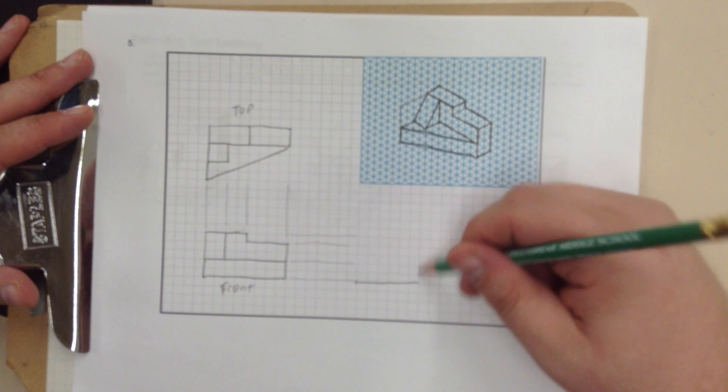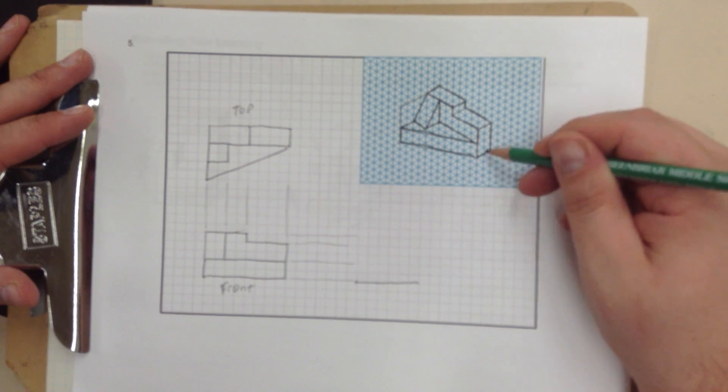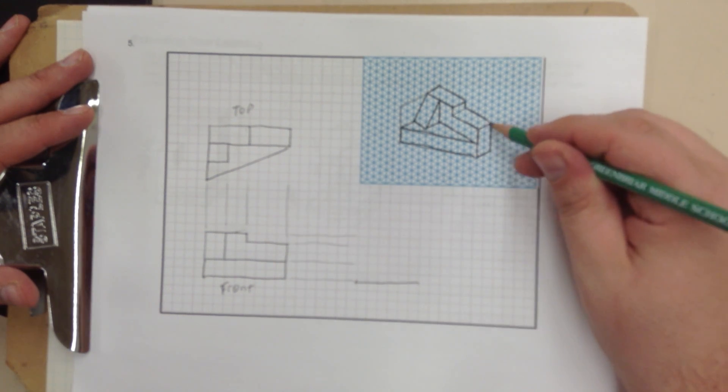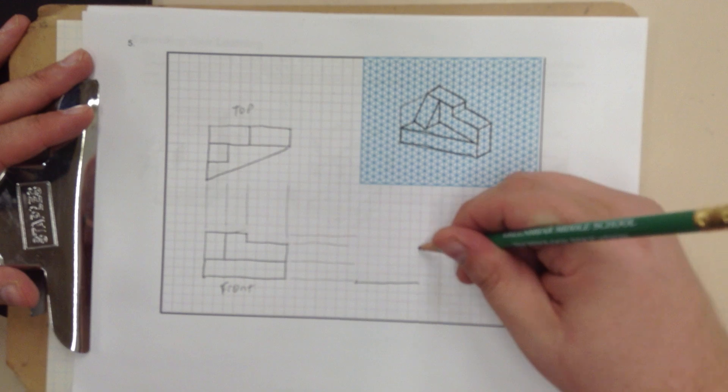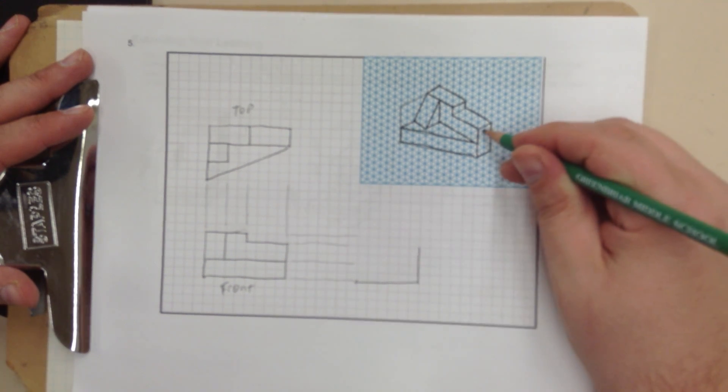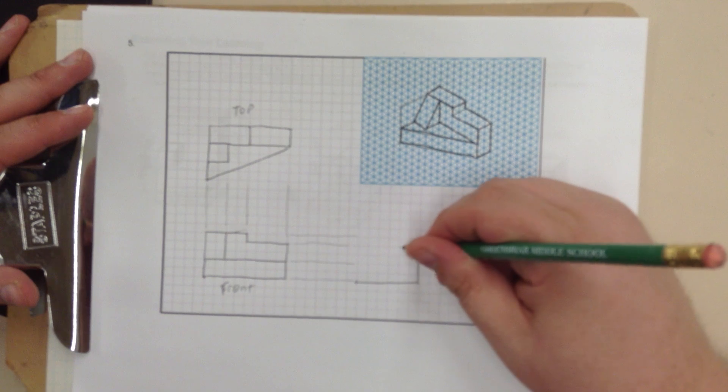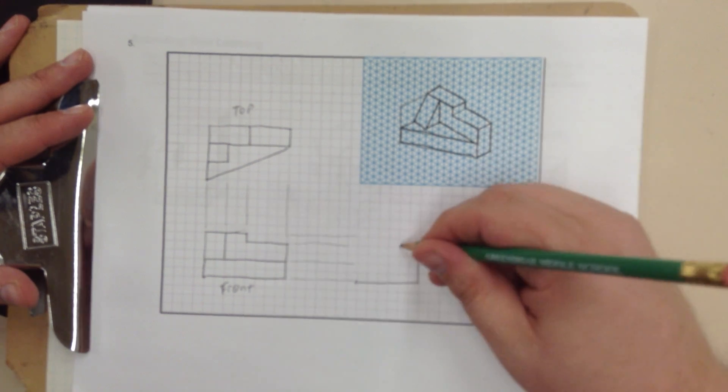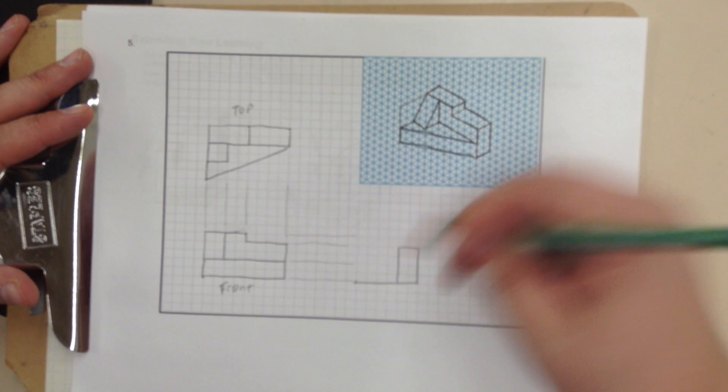If I look at this side, which is going to correspond with that, it is 1, 2, 3, 4 high. 1, 2, 3, 4 high. This is 2 wide. 2 wide. And that line goes straight down. Just like so.